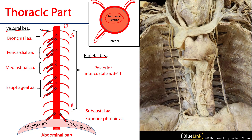We also have a pair of subcostal arteries below the twelfth rib, as well as superior phrenic arteries, which are going to anastomose with pericardiacophrenic arteries as well as musculophrenic arteries — branches of the internal thoracic — to serve the superior surface of the diaphragm with blood.